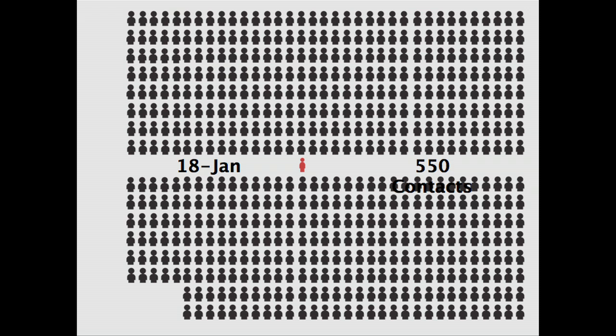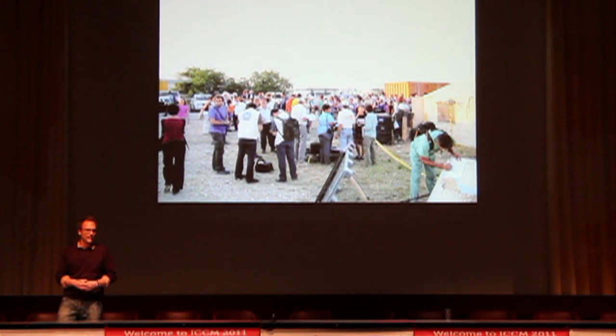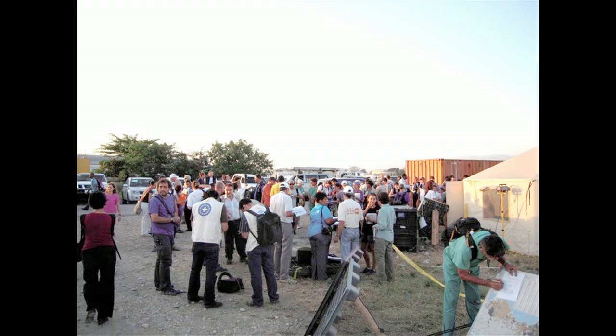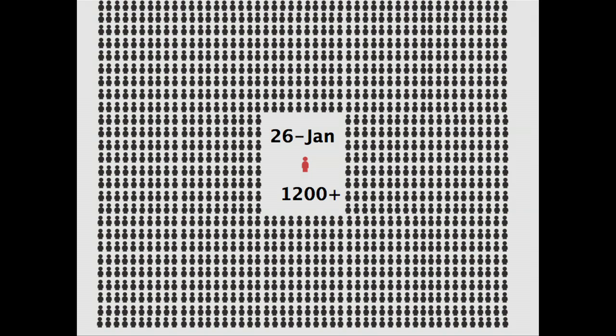By the 20th of January, we started standing up more formalized databases — who's doing what where — to manage these contacts, because we realized there were going to be a lot more people coming. What you see in the picture here is a health cluster meeting with over 90 people at one meeting, under the tarmac where military-sized planes are taking off every three minutes, inside a tent at 40 degrees. By the 26th of January we had over 1,200 contacts, estimating that probably represented about a quarter or less of the people actually in country, and around 500 organizations.